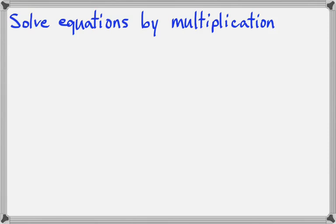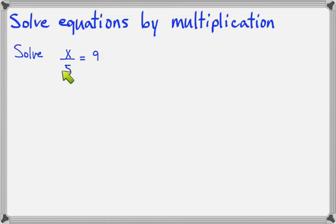In this lesson, let's learn how to solve equations by multiplication. The equations we're going to look at will look something like this: x divided by 5 equals 9. We're always trying to get x isolated, and we want x to be by itself so that the equation says x equals some number.